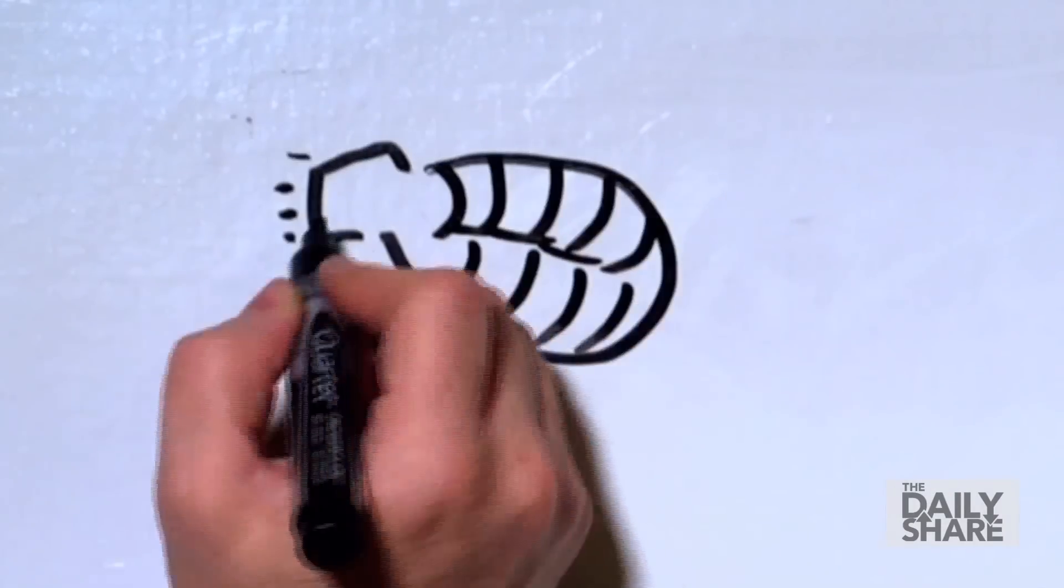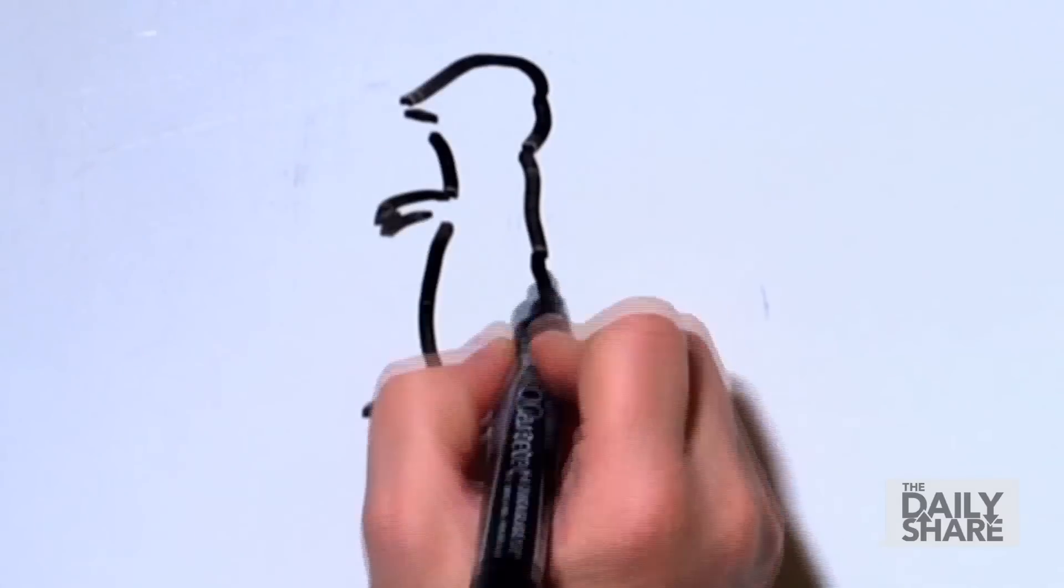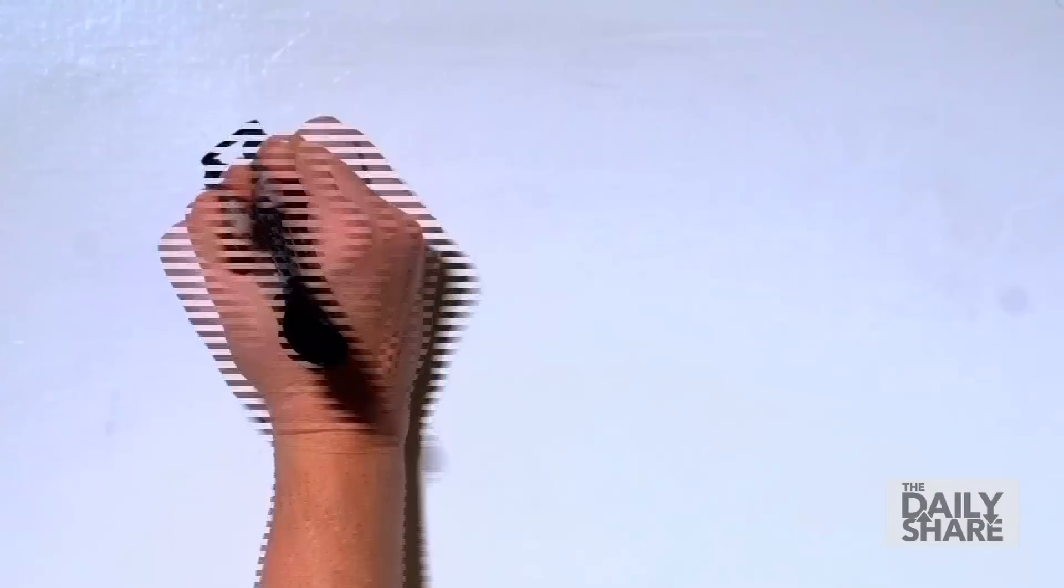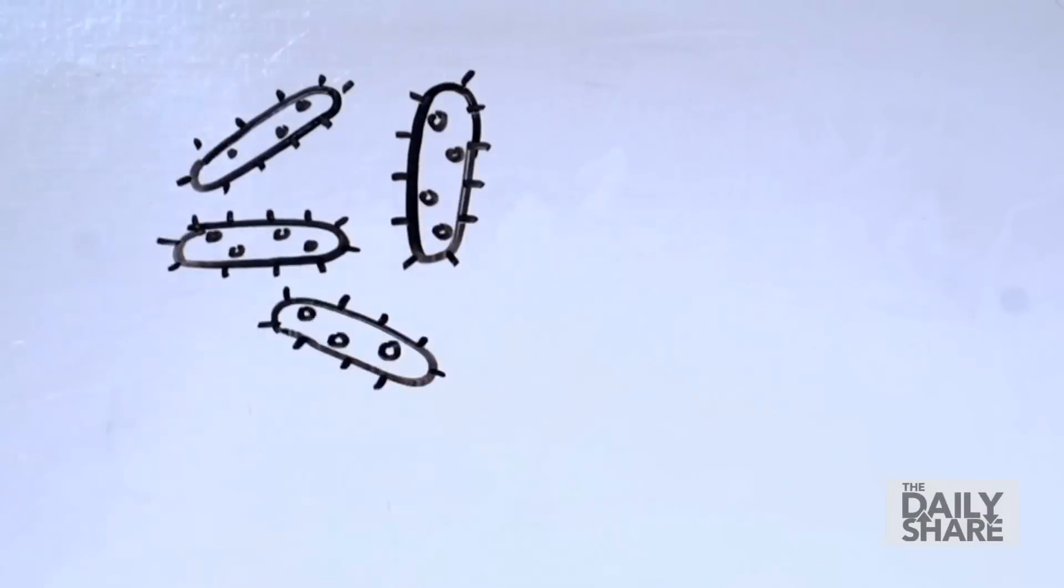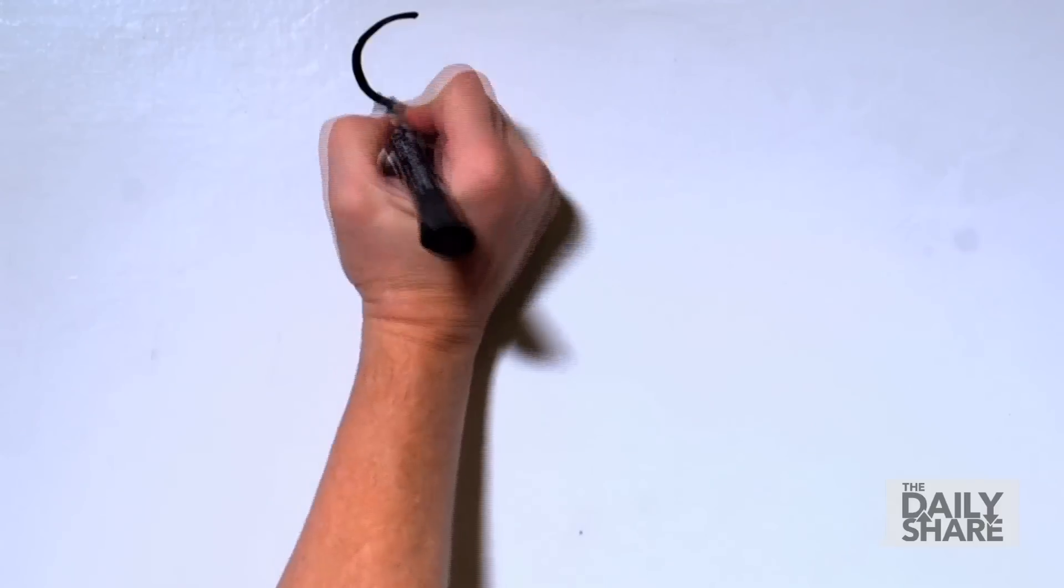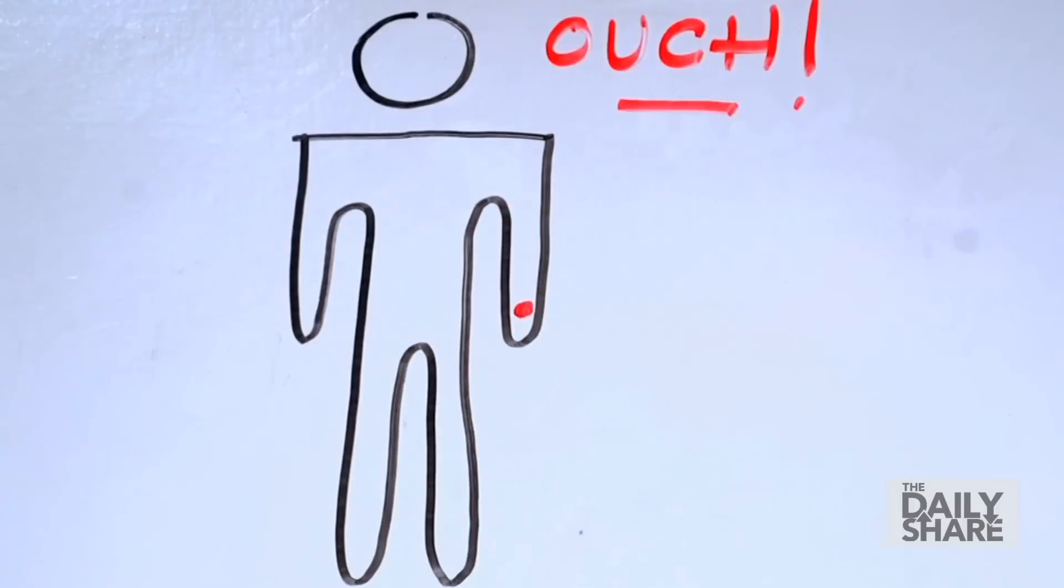Most people get it from a flea bite. Fleas may feed on rodents like prairie dogs, mice, and squirrels infected by a bacteria called Yersinia pestis. When an infected flea bites a human, it can transmit the plague bacteria.